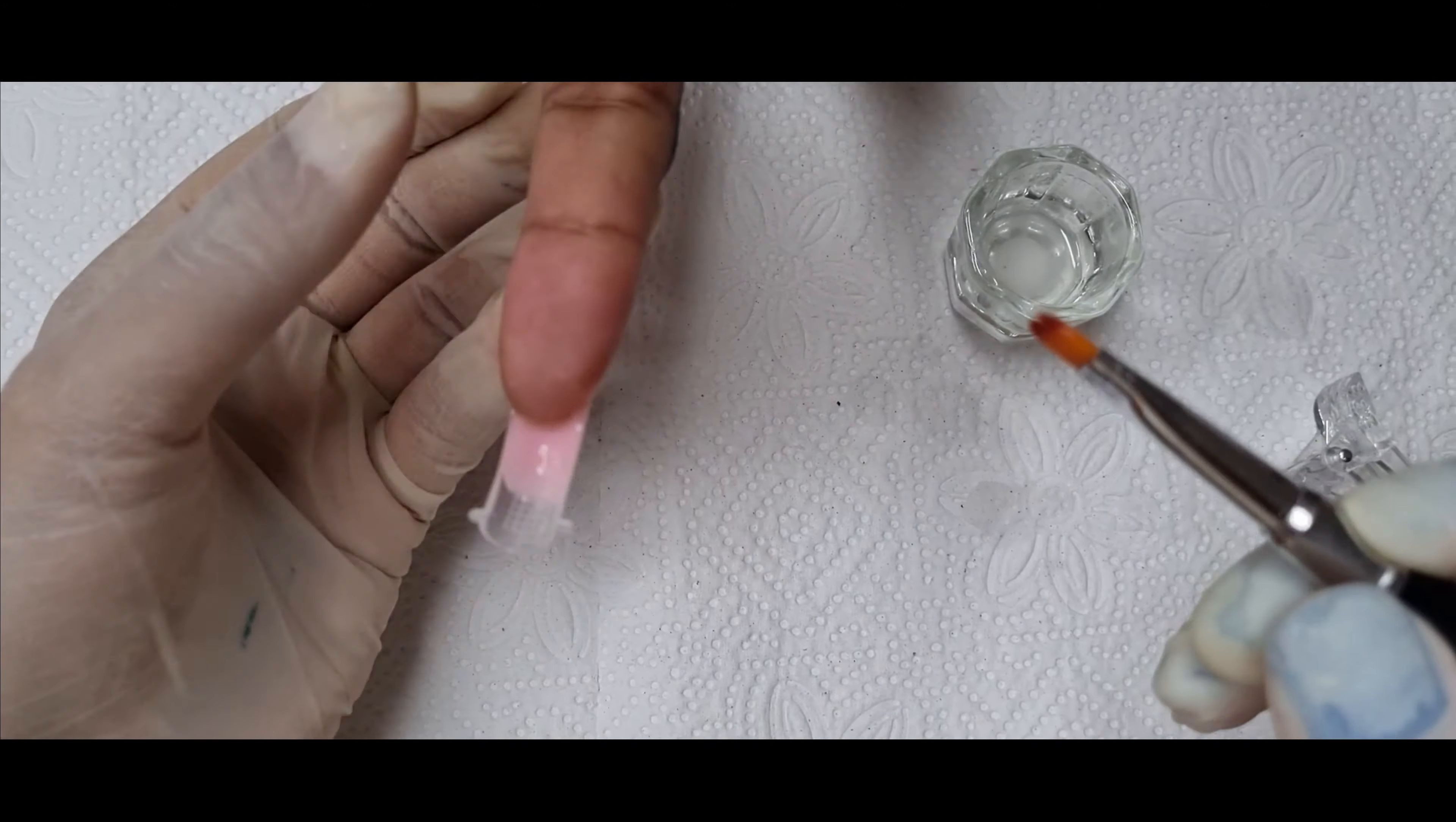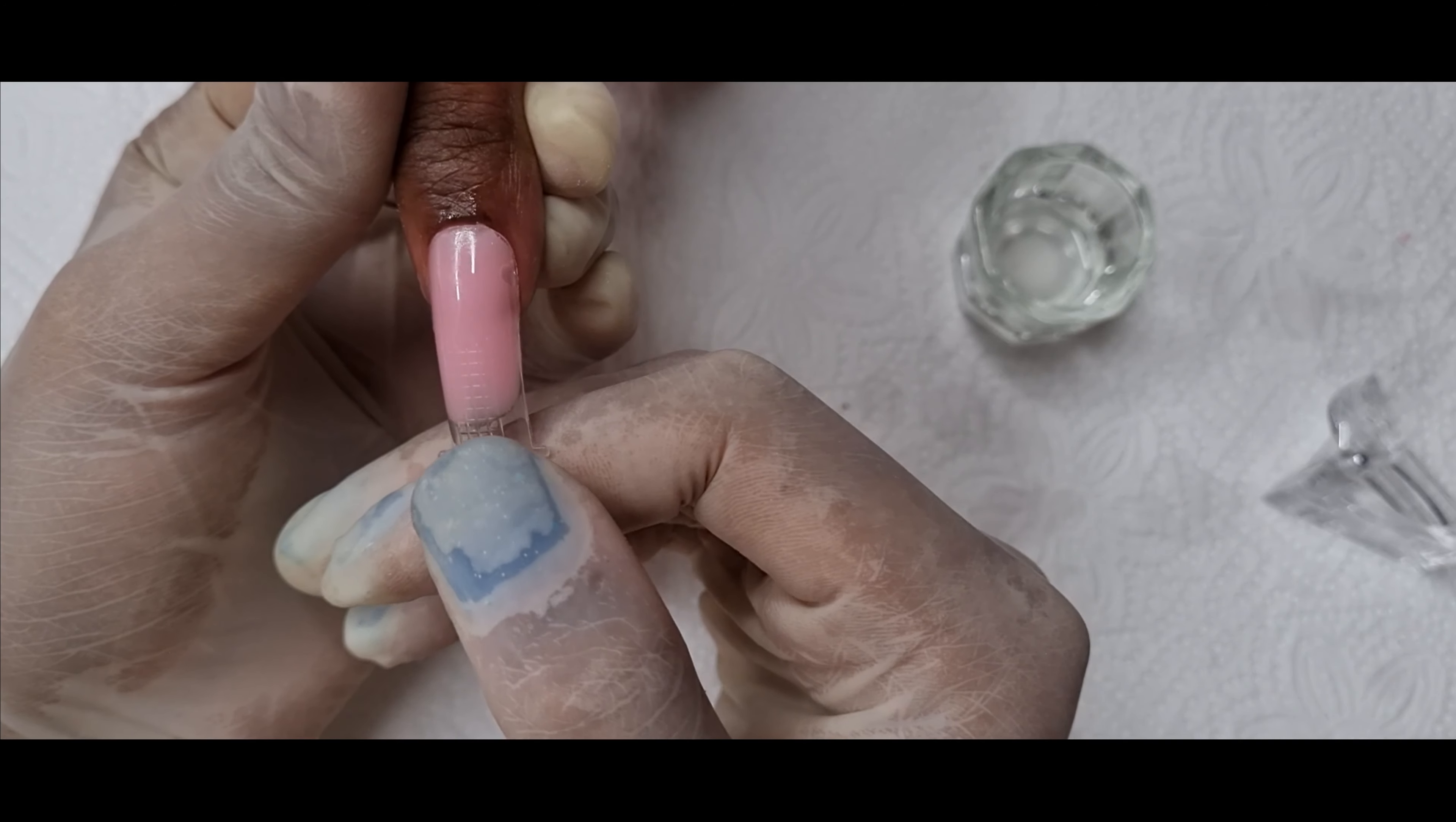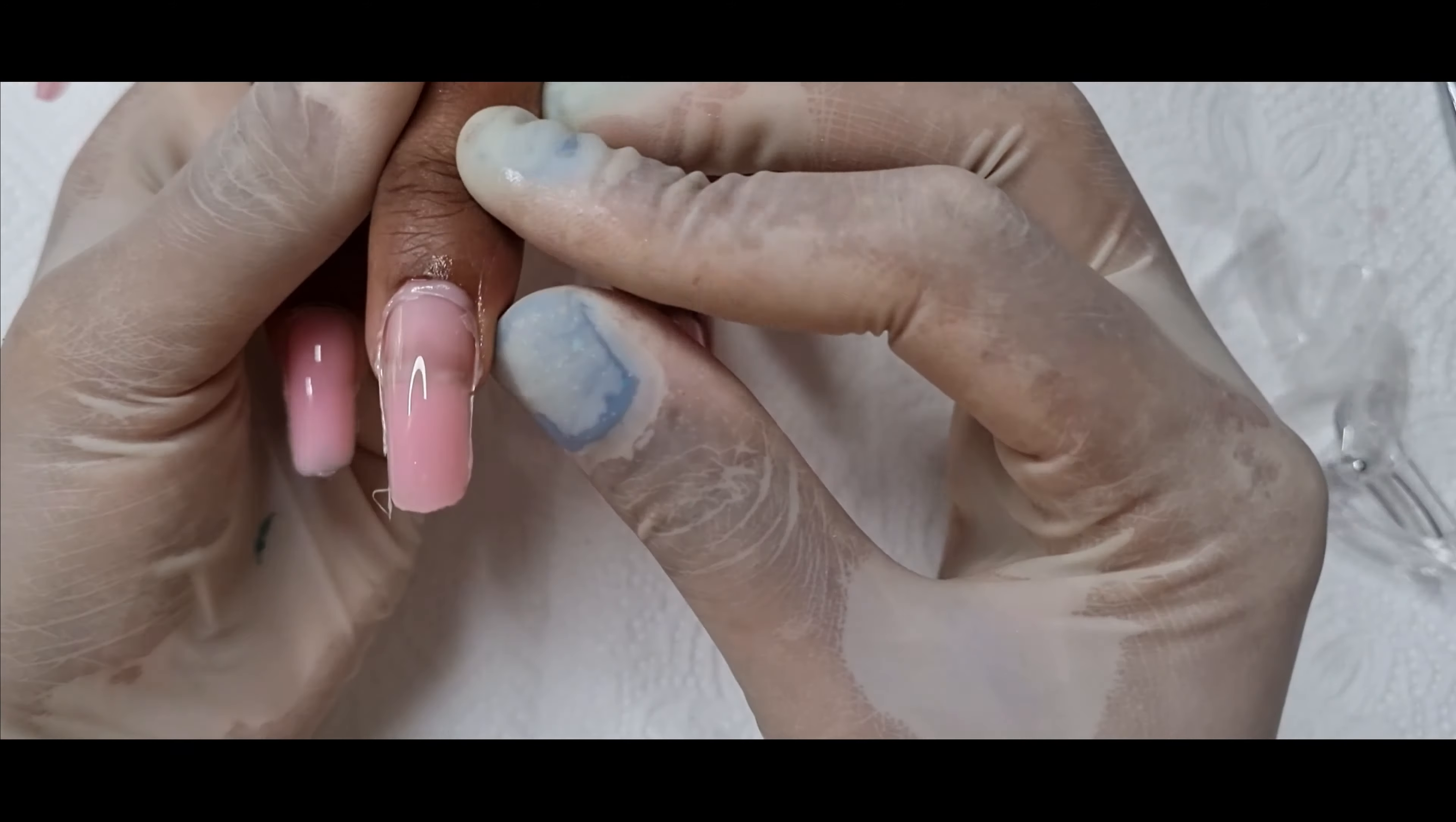So I'm just doing the rest of the nails before I fix the middle finger. Make sure you remember to brush the underside of the nail before curing. Once it's cured you can just easily pop off the dual forms.